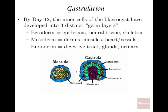After the blastocyst has implanted, by day 12 the inner cells have developed into three distinct germ layers. 'Germ' here — think of germination, new life. The three layers are the ectoderm (outer), mesoderm (middle), and endoderm (inner). These are not all the tissues, but some major examples: ectoderm becomes the epidermis and neural tissue including the brain and nerves.